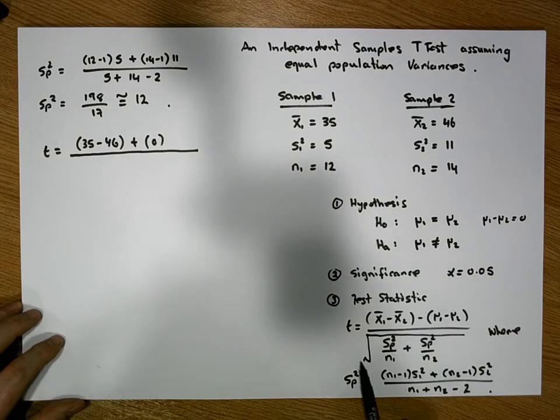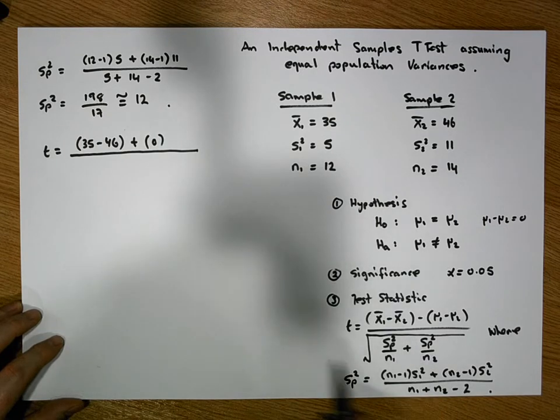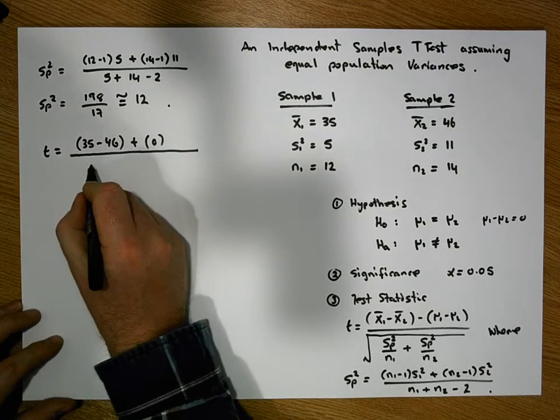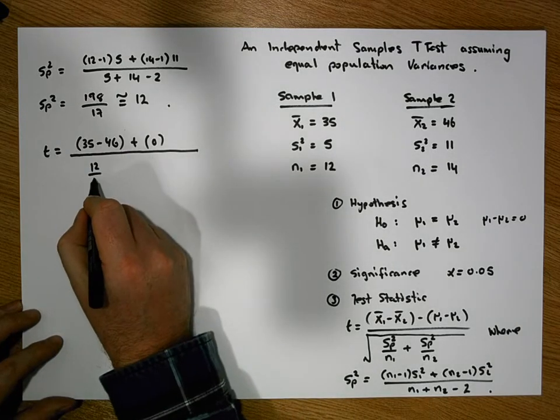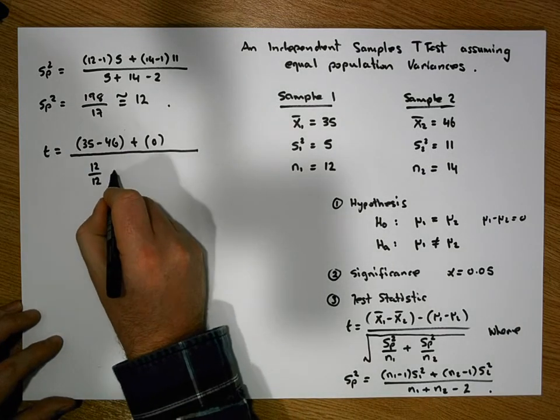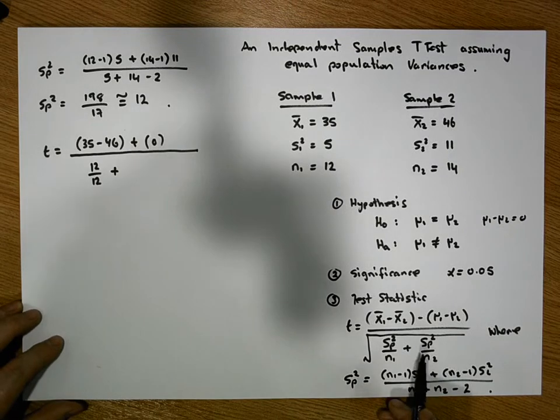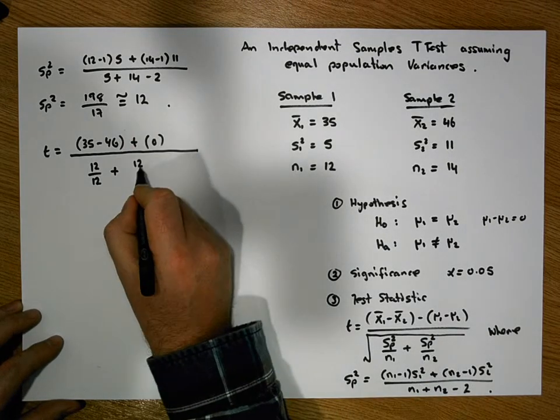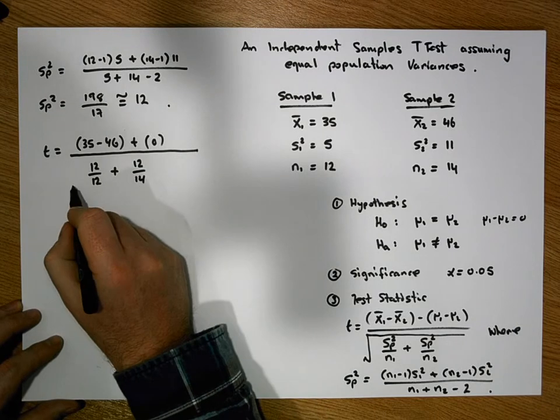Now, suppose the standard error of the mean is equal to the square root of the pooled variance over n1. The pooled variance is 12, so it's 12 divided by the first sample size, which is 12, plus the second pooled variance, which is 12 divided by 14, and it's the square root of this.